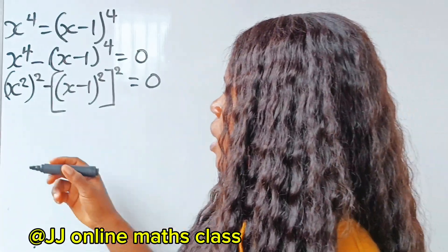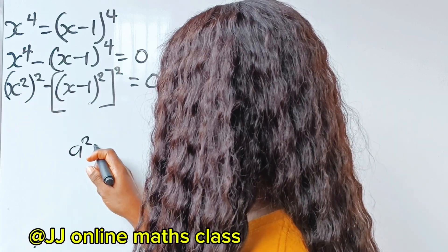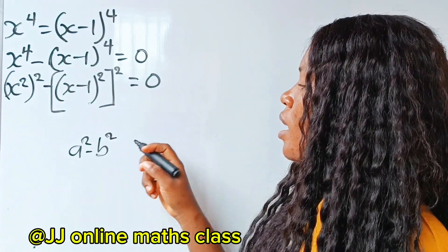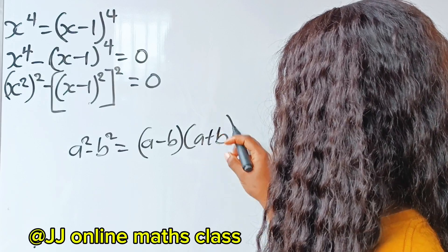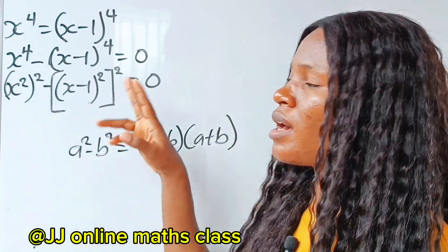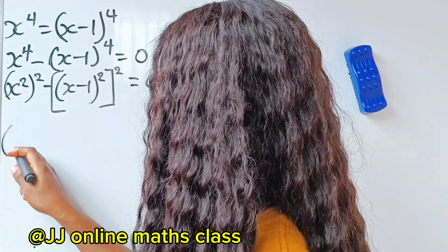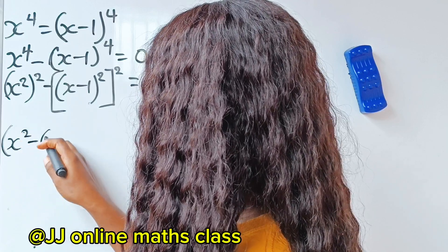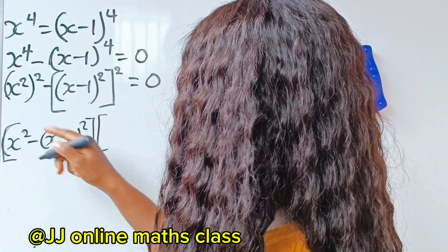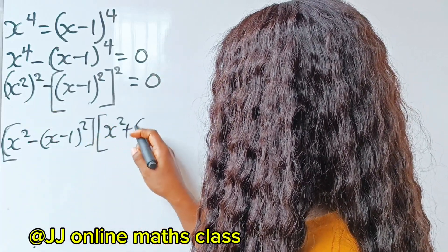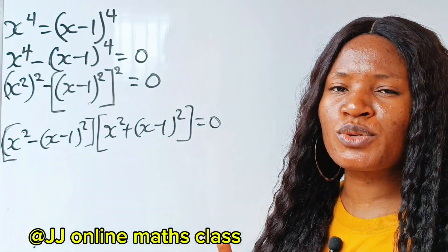We have a squared minus b squared. According to the algebra identity, a squared minus b squared is the same as a minus b multiplied by a plus b. In this case, our a is x squared and our b is x minus 1 squared. So it becomes x squared minus x minus 1 squared, multiplied by x squared plus x minus 1 squared, equal to 0.